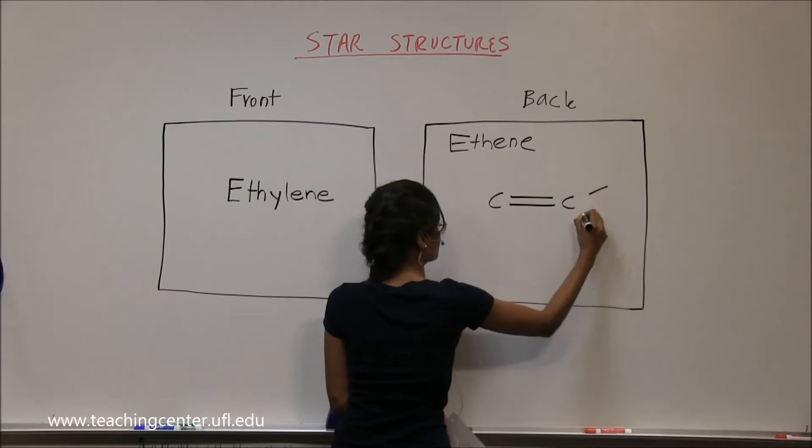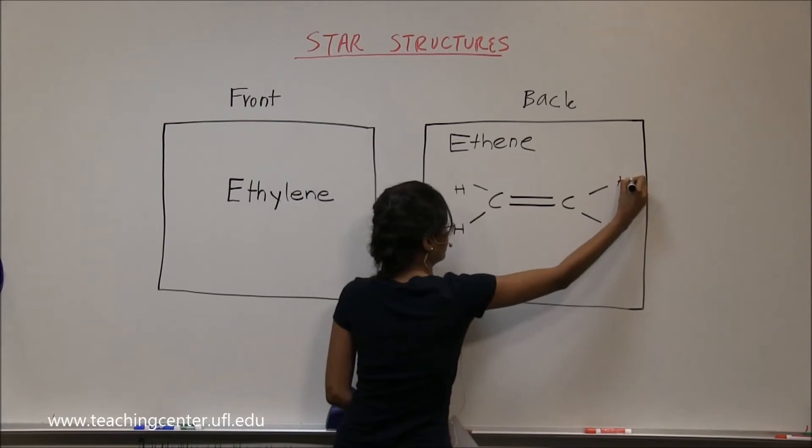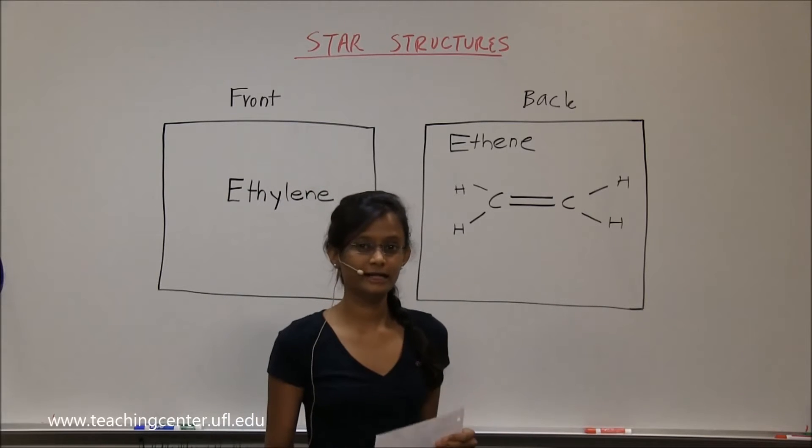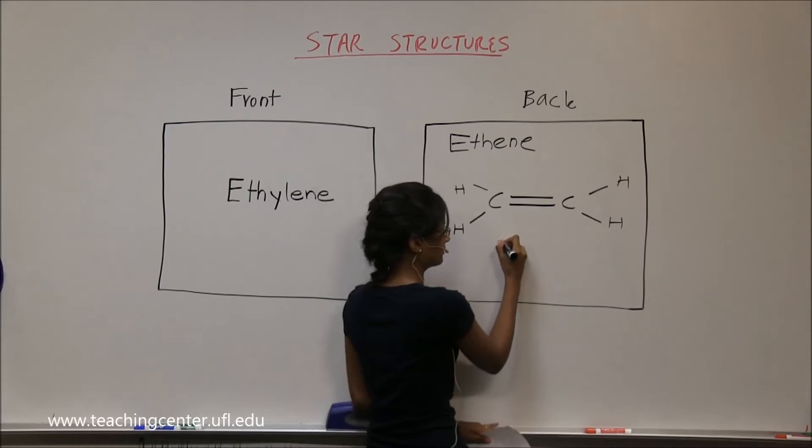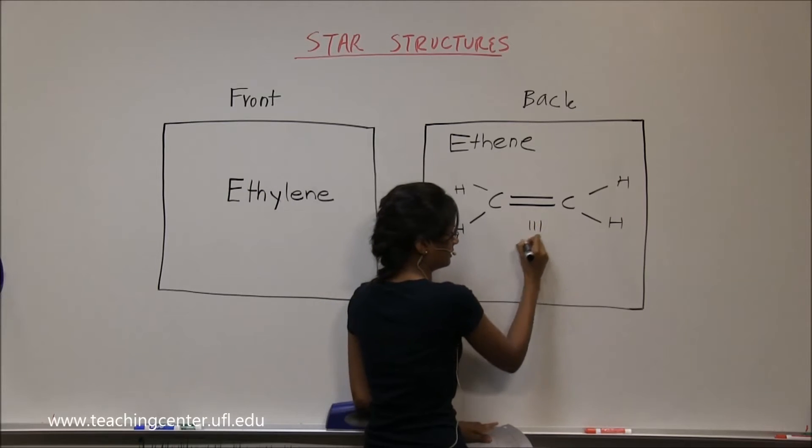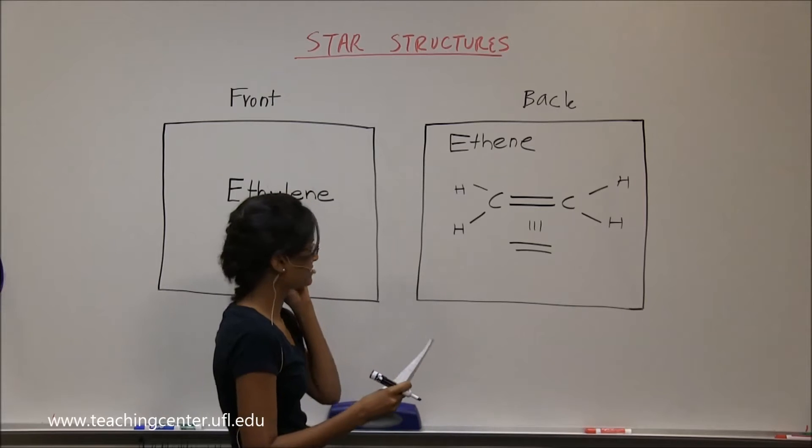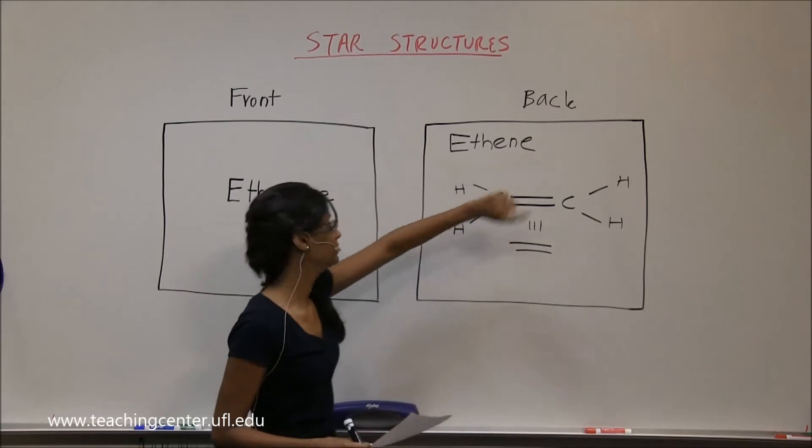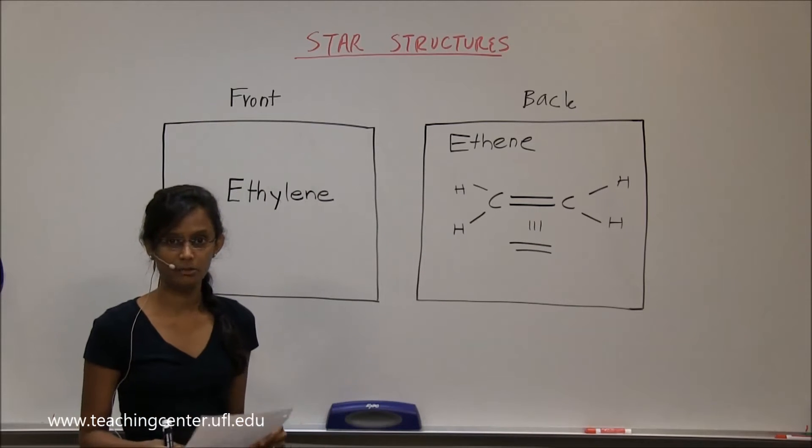Both of these are carbons. Make sure you guys get used to drawing line angles. I know it's the beginning, but just the line angle form of this would be just the two lines. Okay, so it's ethene, which is the IUPAC name, and ethylene is what it's called in common name.